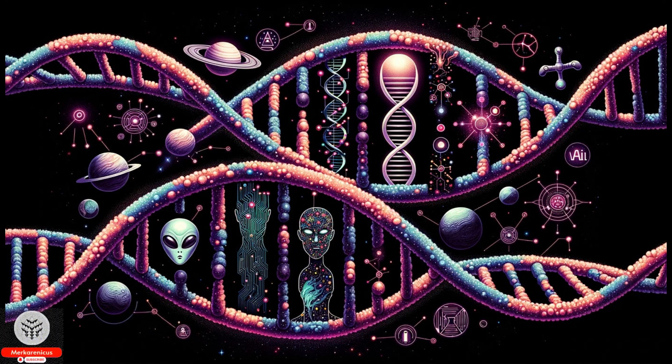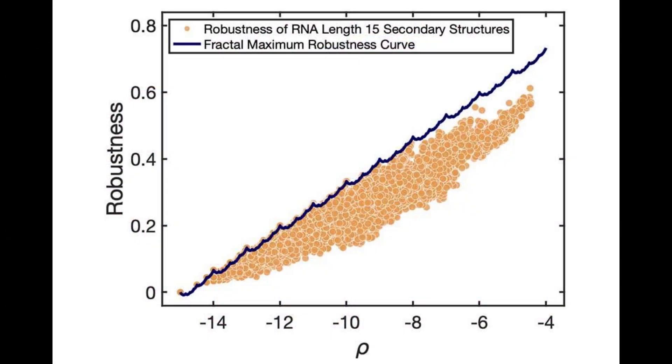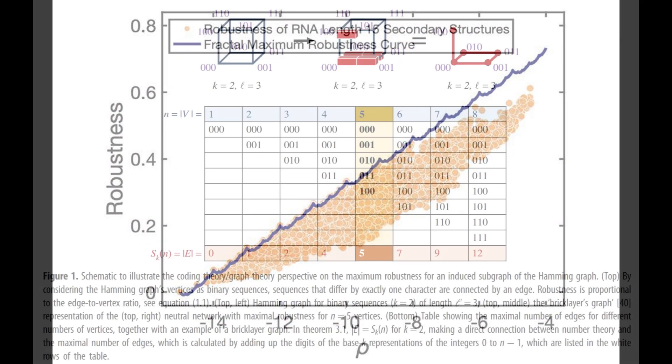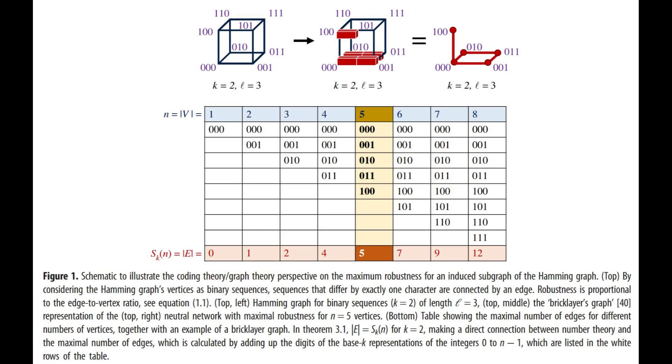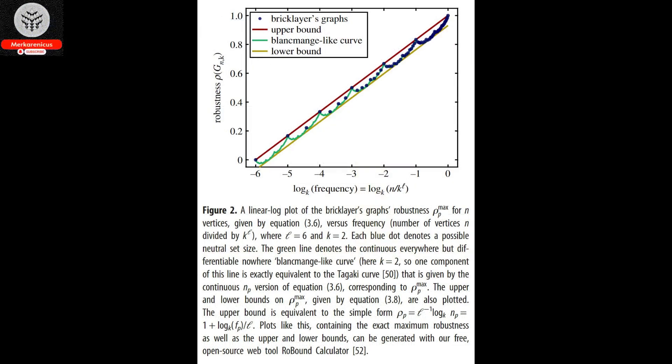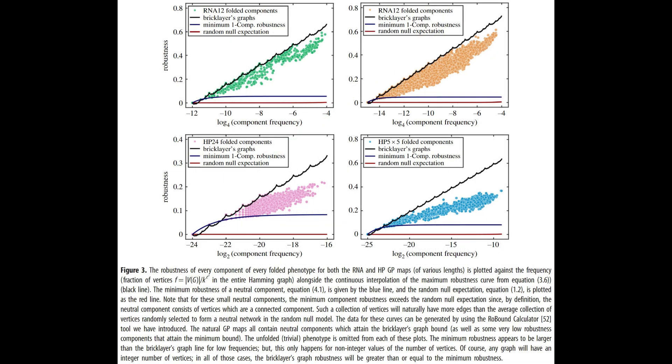A fascinating correlation between number theory and evolutionary genetics has been discovered by scientists. Today we will delve into an intriguing subject that involves the findings of esteemed researchers from renowned institutions such as Oxford, Harvard and MIT. Their groundbreaking work has unveiled a fascinating correlation between number theory and evolutionary genetics.